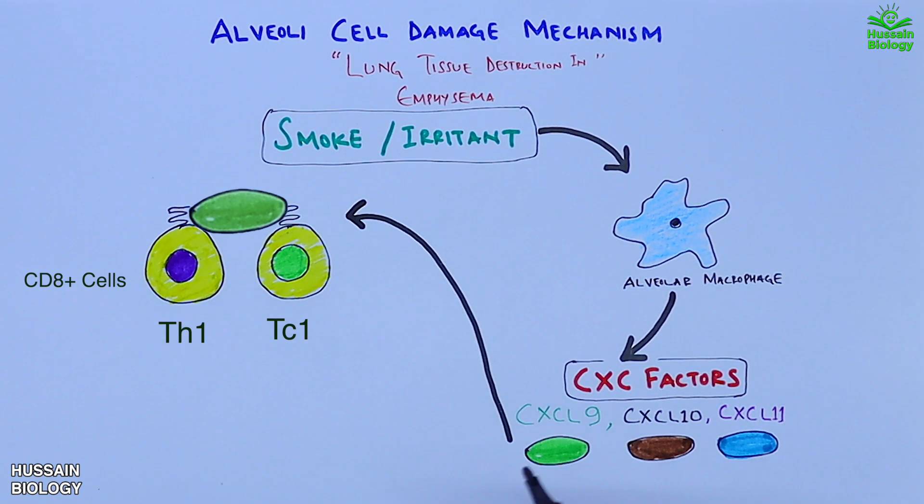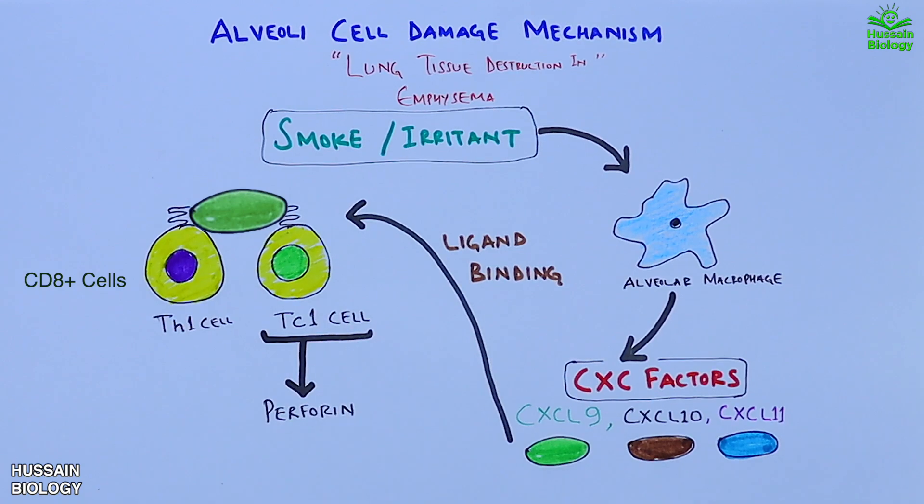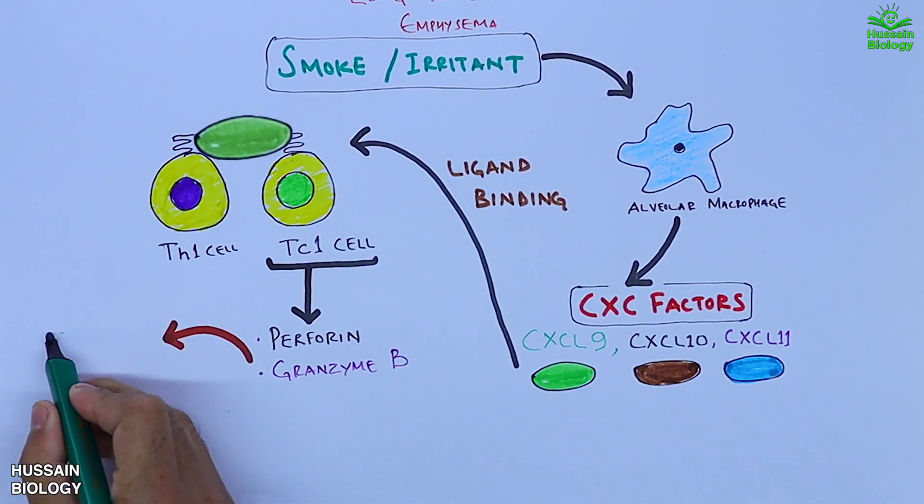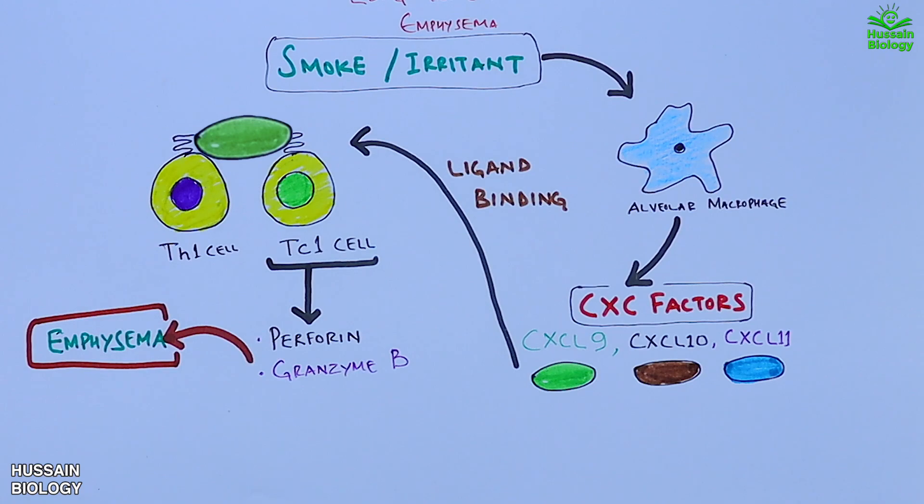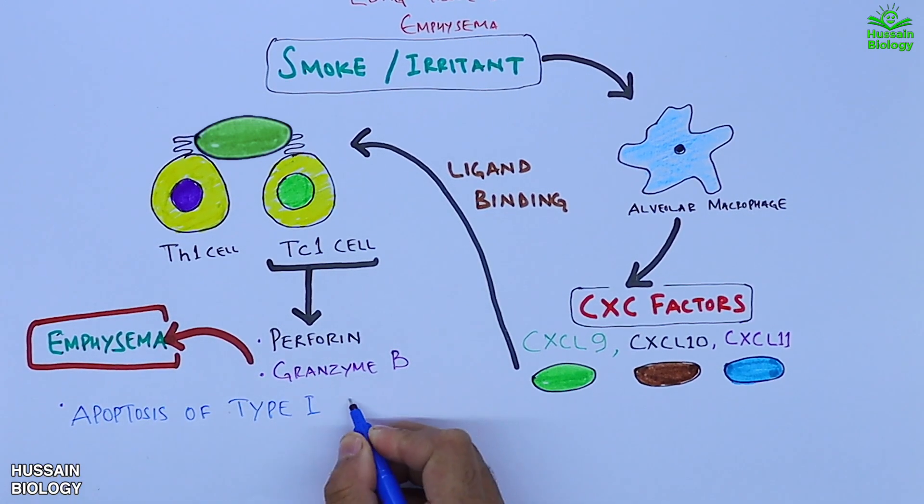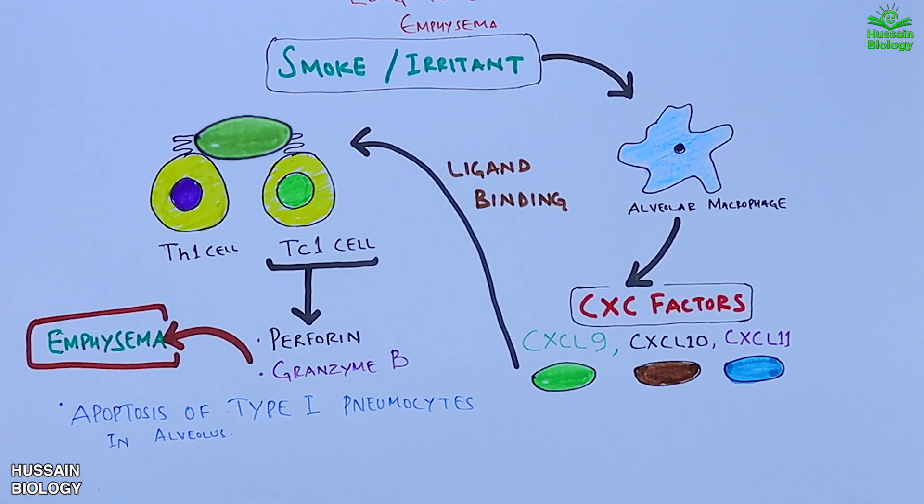This ligand binding mediates the release of perforin and granzyme B molecules, which leads to amphysema. These factors like perforin and granzyme B drive apoptosis of type 1 pneumocytes in the alveoli, thus destructing the lung tissue.